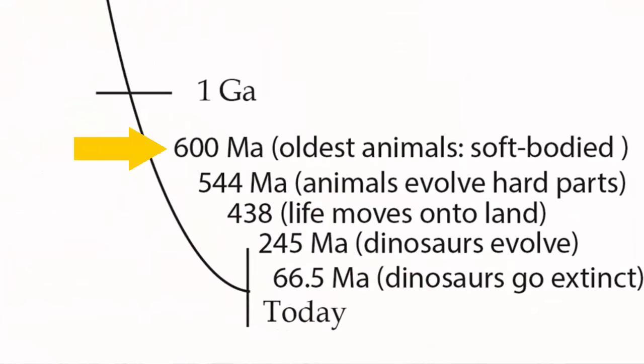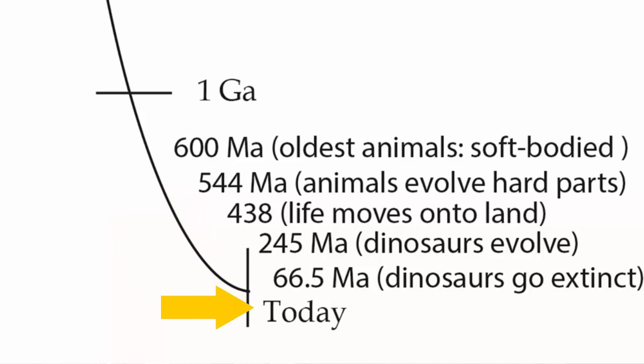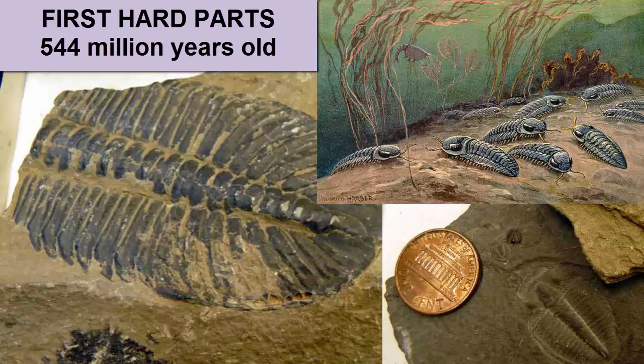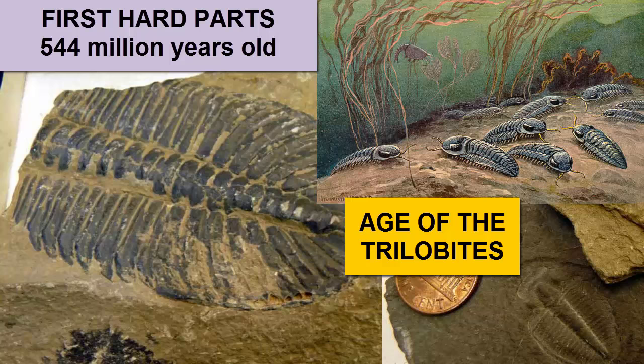After oxygen levels rose to current levels and multi-celled life evolved, evolution really took off. 544 million years ago, we see the first evidence of hard parts, thus contributing to many orders of magnitude more fossils forming, as hard parts make fossilization much easier. It was also the beginning of the age of the trilobites, crab-like animals with exoskeletons that scuttled across the sea floor.